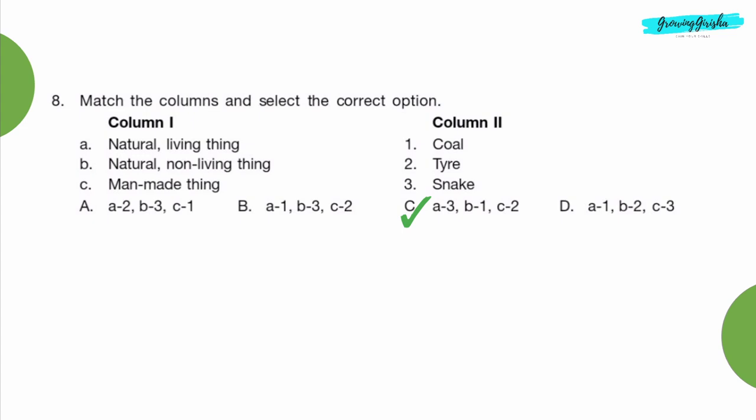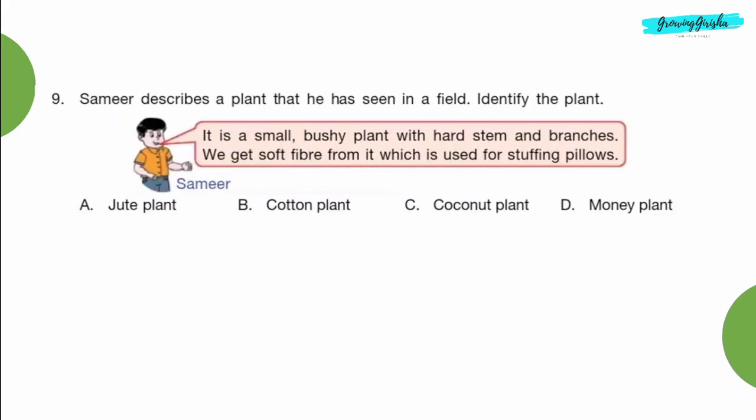Question 9: Samir describes a plant that he has seen in a field. Identify the plant. It is a small bushy plant with hard stem and branches. We get soft fiber from it which is used for stuffing pillows. Option B, cotton plant.